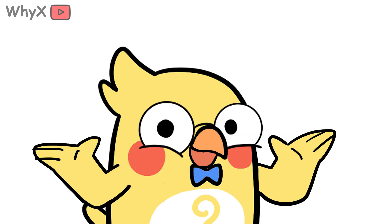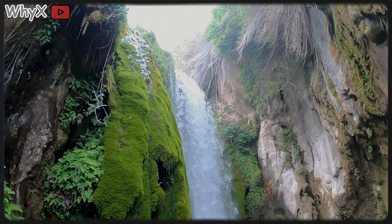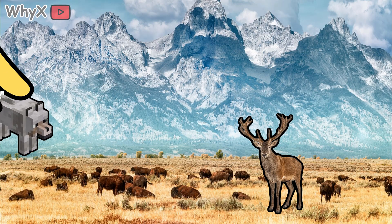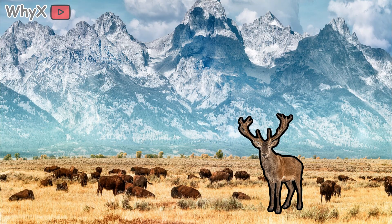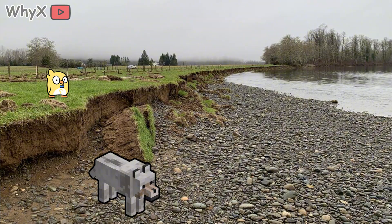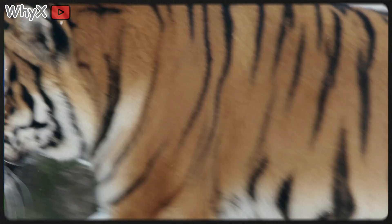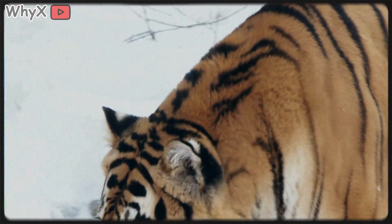The butterfly effect also bleeds into other sciences. In biology, ecosystems are notorious for sensitivity. Remove wolves from Yellowstone and deer populations explode, grasslands vanish, and rivers erode. Reintroduce wolves decades later and the entire landscape reshapes. One species' presence or absence ripples through food webs in ways nobody could have forecast in detail. That's an ecological butterfly effect — a small change in a predator alters the fate of forests and streams.